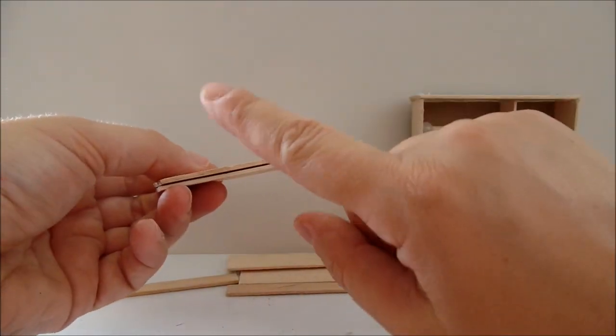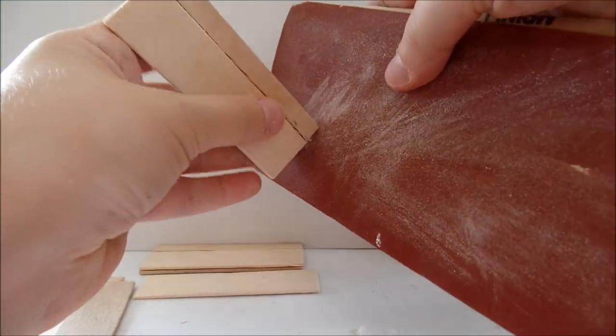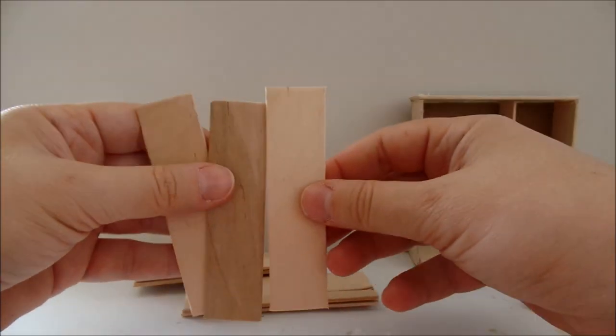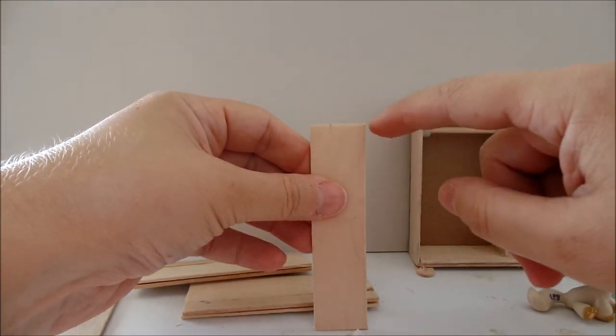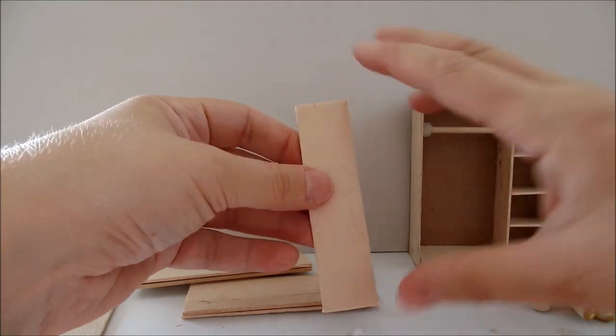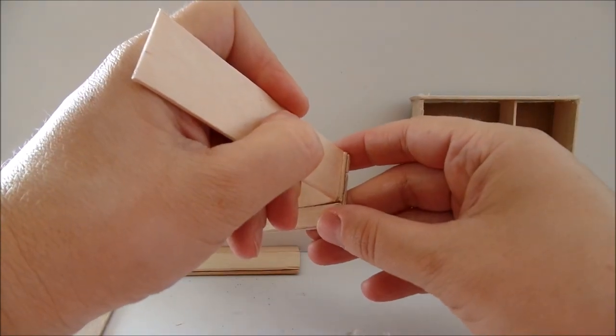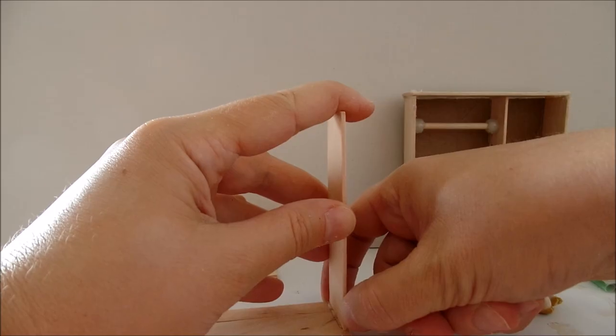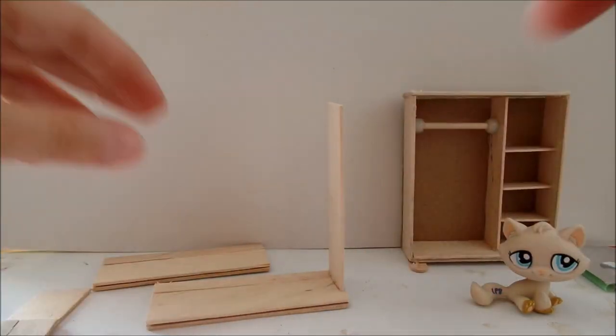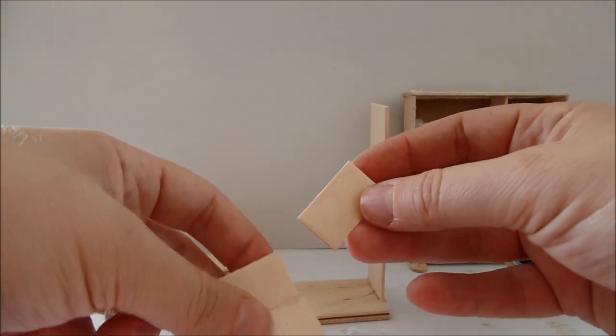File the edges if you can. Take a jumbo popsicle stick and mark the height of the closet. Glue it here on the side. I took a few small pieces of medium-sized popsicles and I'll glue them to the wall of the closet.